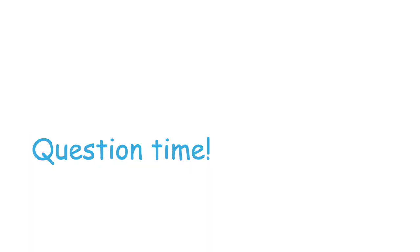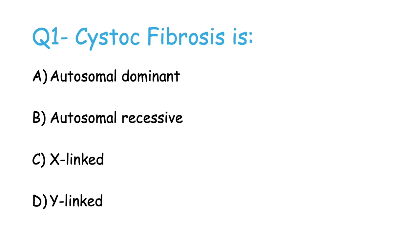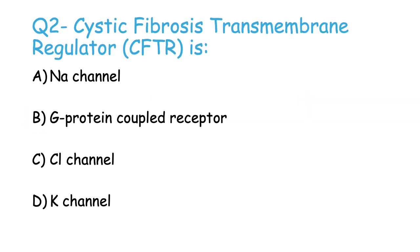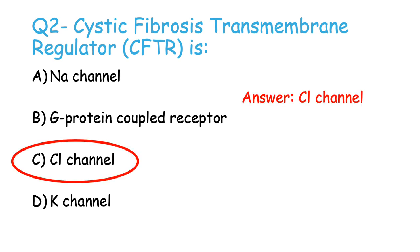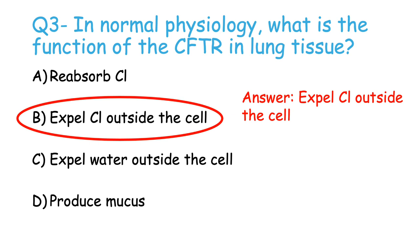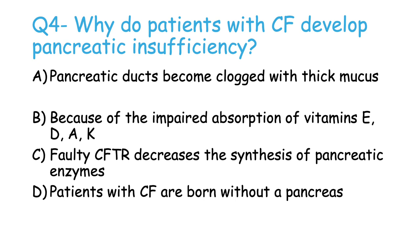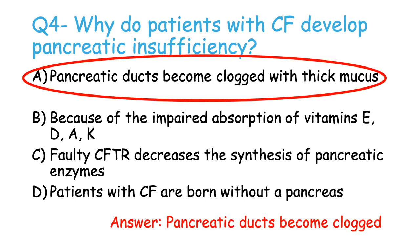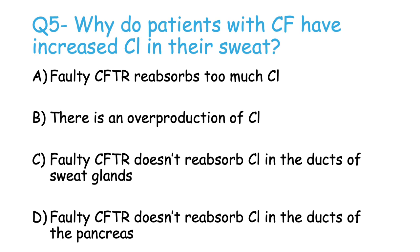Here are some review questions — feel free to pause the video to think of your answers. Question 1: What is the function of the CFTR in normal physiology, specifically in lung tissue? Question 2: Why do patients with cystic fibrosis develop pancreatic insufficiency? Question 3: Why do patients with cystic fibrosis have increased chloride in their sweat?